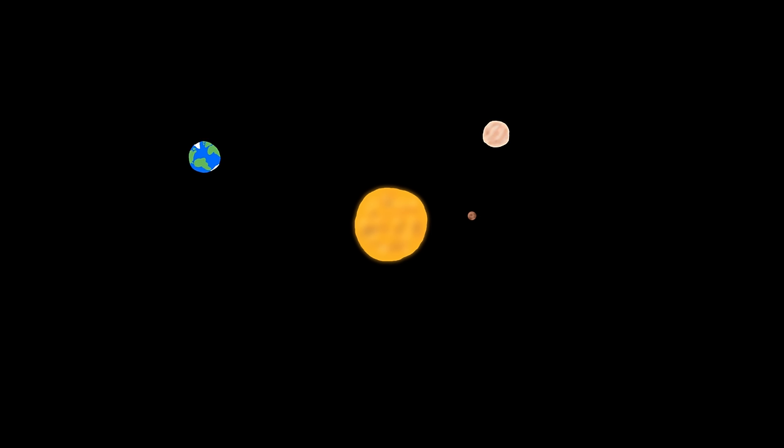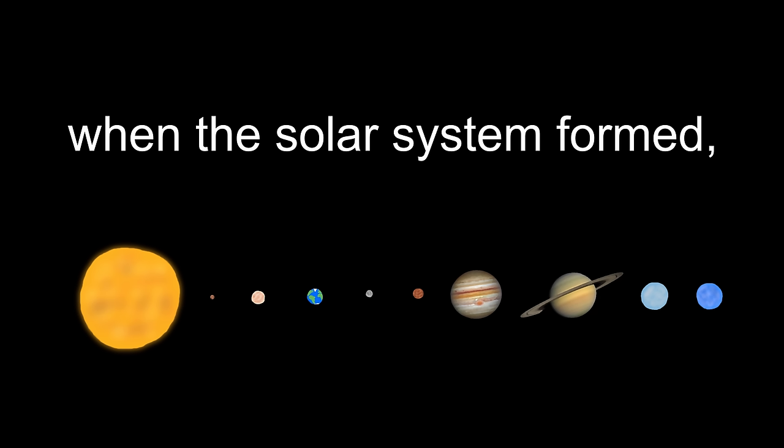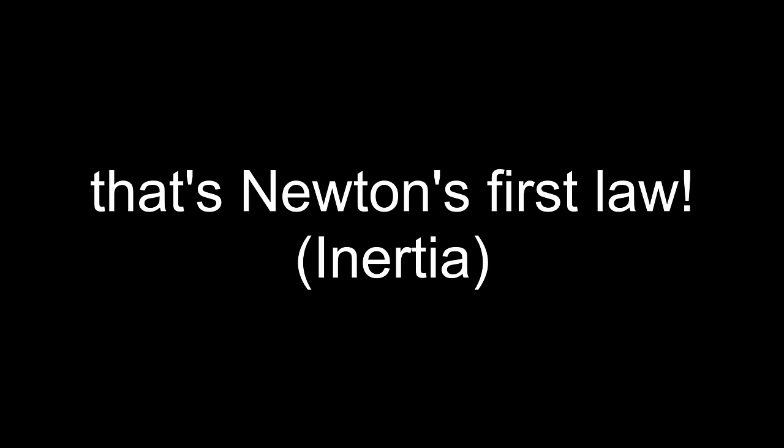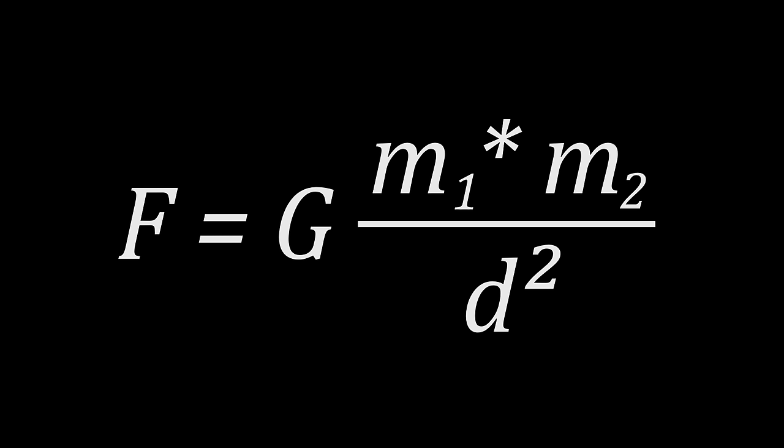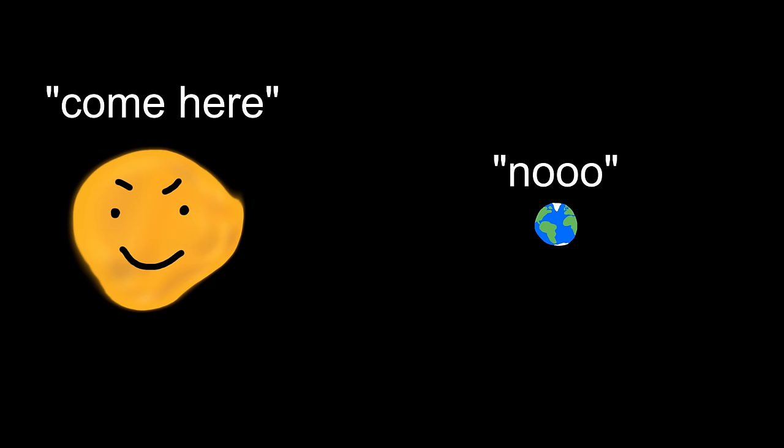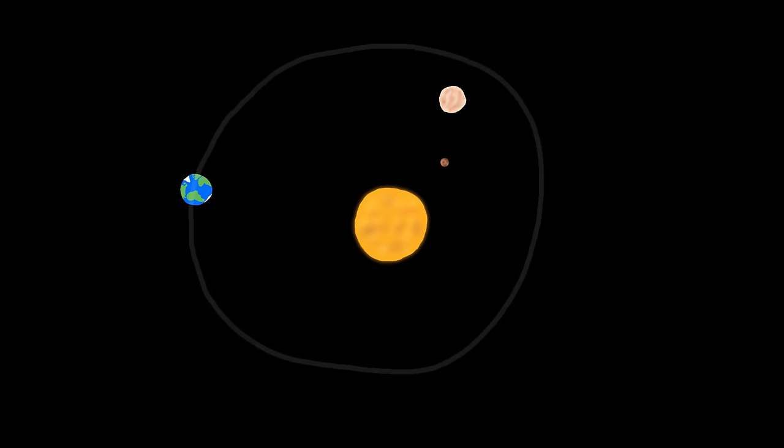Gravity is also the reason why planets in our solar system orbit the sun. They got their initial velocity when the solar system formed out of spinning gas, and since there's nothing in space to stop them from moving, they'll keep moving. Hey, that's Newton's first law. The sun is so massive that the force of gravity keeps pulling the planets towards the sun, but the planets are fast enough to essentially fall towards the sun, but miss it, and this goes on forever, creating a round orbit.